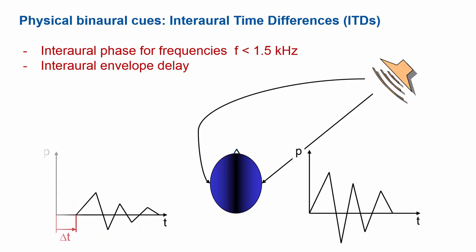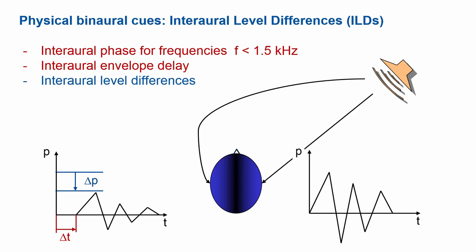If a sound source comes from the side, it takes the sound a little bit of time to travel around the head to arrive at the contralateral ear. That introduces a phase disparity at low frequencies — an interaural phase difference — as well as a delay of the envelope or group delay of the sound. On top of that, the sound will be attenuated and amplified at certain frequencies due to the head casting a shadow, the pinna being directive, and shoulder reflections, creating level or intensity differences between the two ears which the brain can pick up.